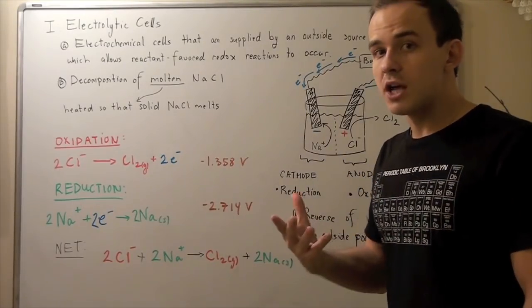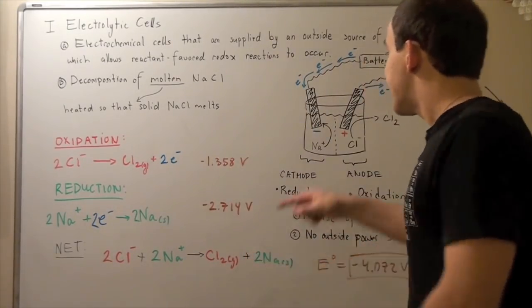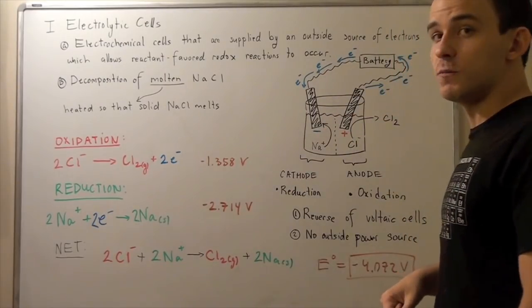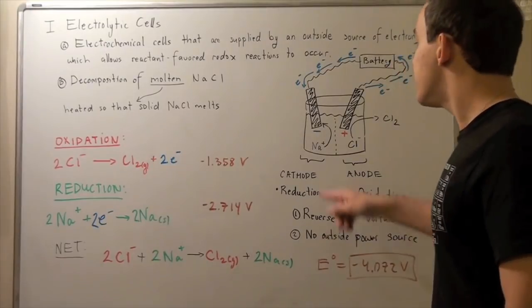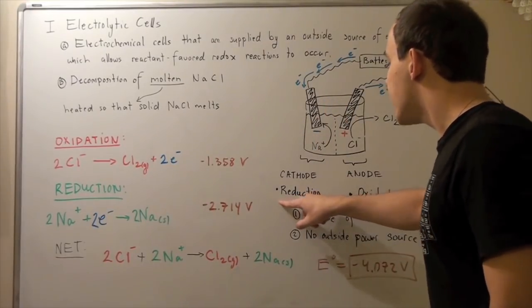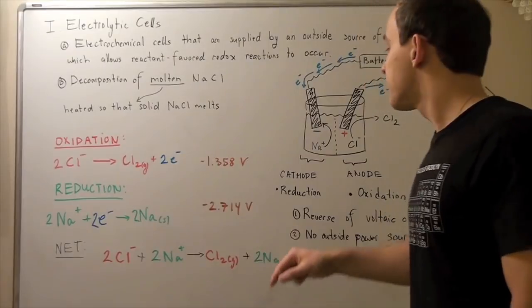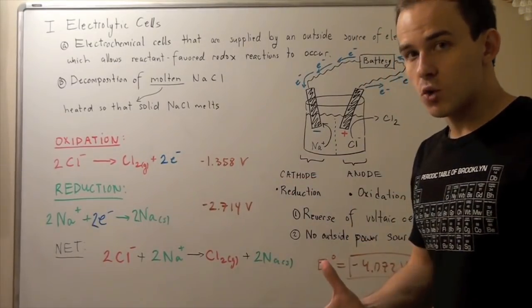Well, some of the electrons will transfer into our sodium molecule. And that means our sodium will be reduced. So this section is where reduction occurs. And that means, by definition, it must be our cathode.